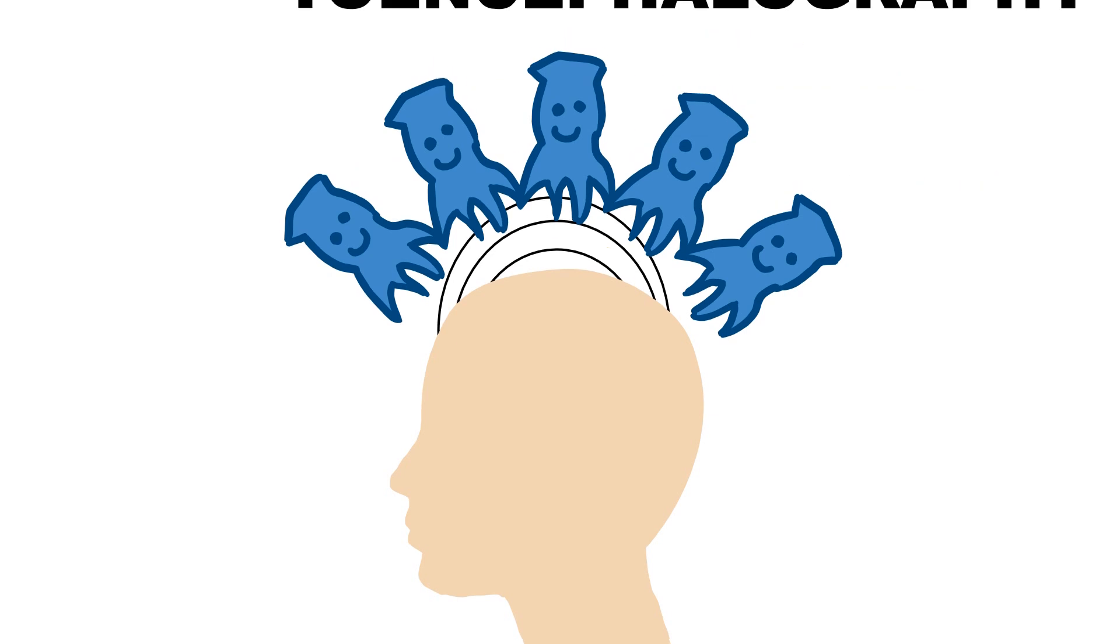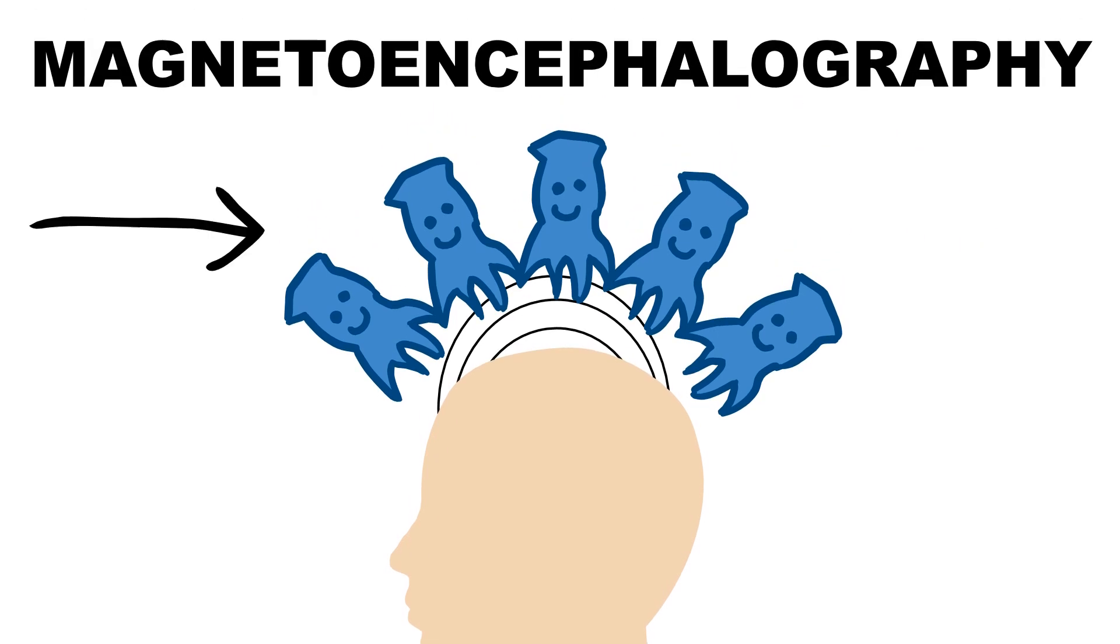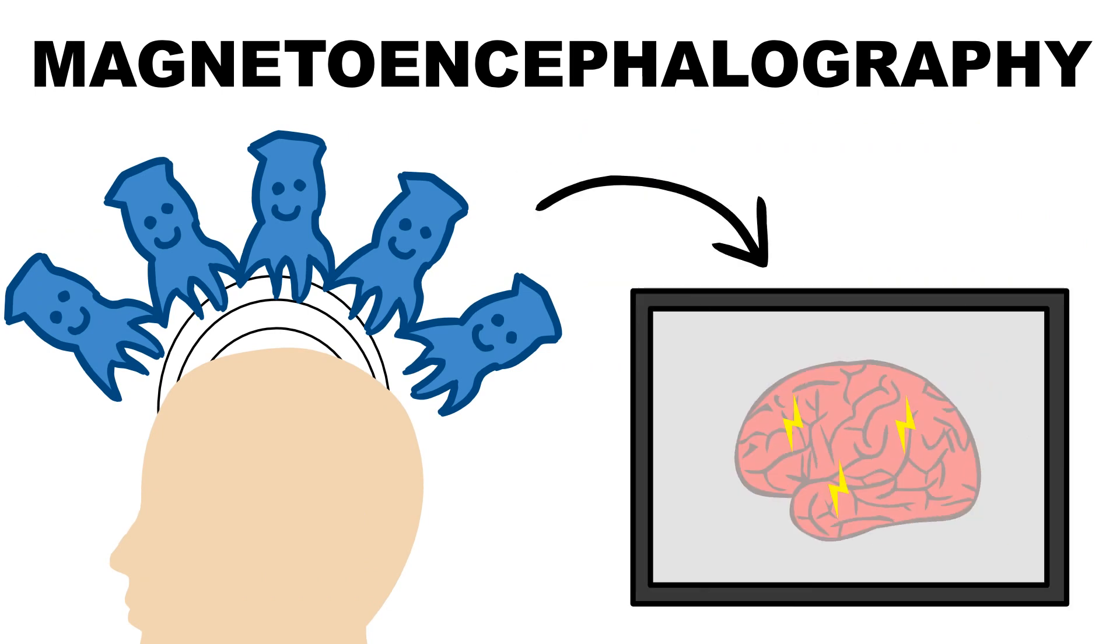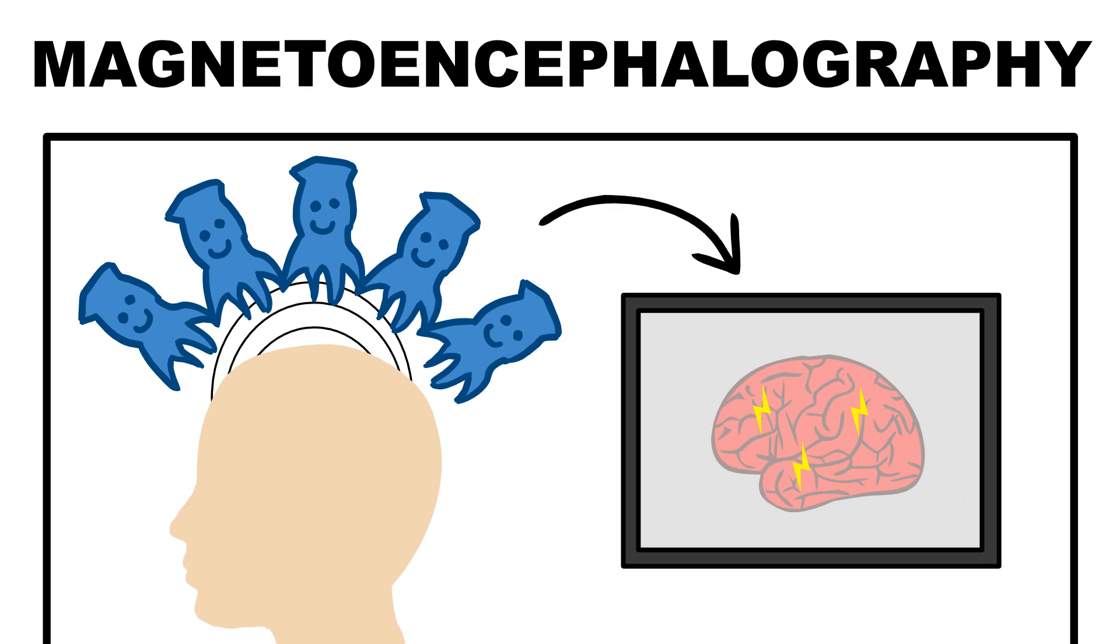In summary, magnetoencephalography works by using supersensitive magnetism detectors called squids to measure and locate the electrical activity of the brain. You've got to do it in a shielded room and with special cooling, but it's relatively easy to do and has great spatial and temporal resolution.